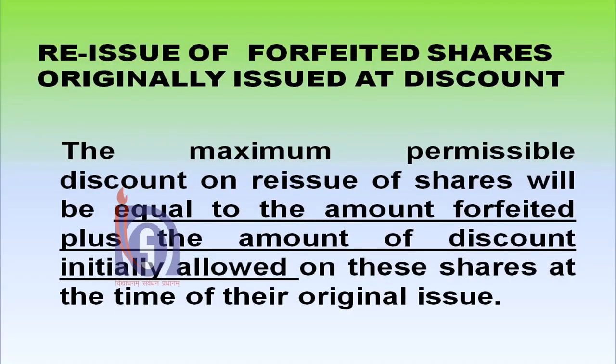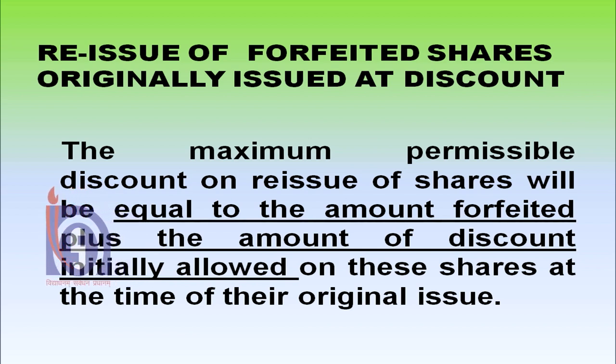The third situation is reissue of forfeited shares originally issued at discount, that means the shares have been originally issued at a price lower than the face value. The maximum permissible discount on reissue of shares will be equal to the amount forfeited plus the amount of discount initially allowed on these shares at the time of original issue. Under these situations we discussed about the minimum price which the company can charge at the time of reissuance of shares.